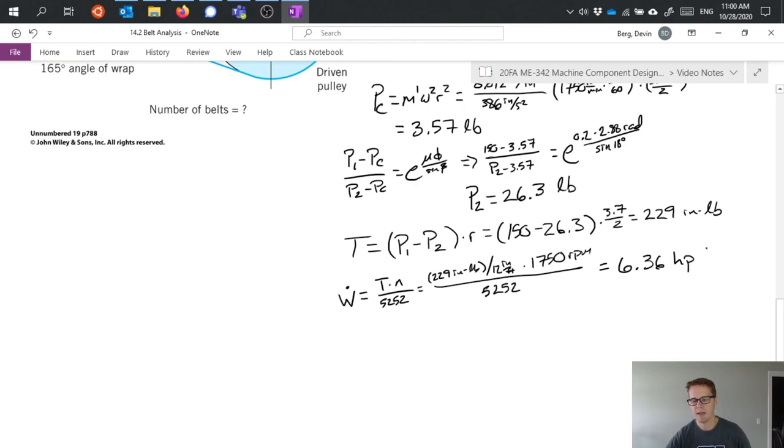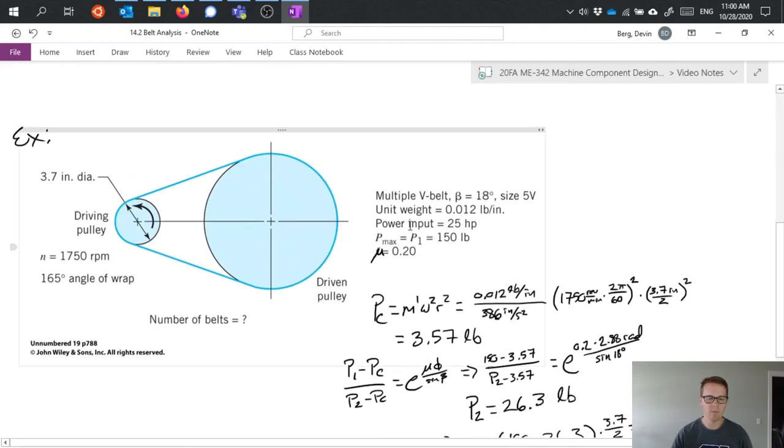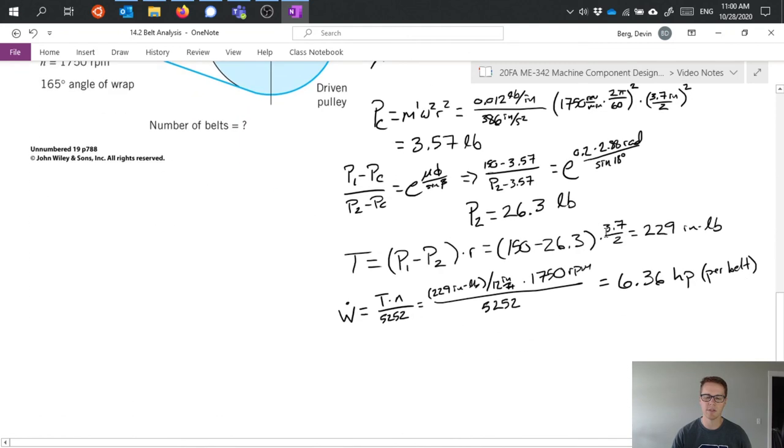And that is per belt. I've calculated what my power capacity is per belt. And if we go back up here, the problem said that we need to input 25 horsepower into the system. That's what we're intending to drive with this system.